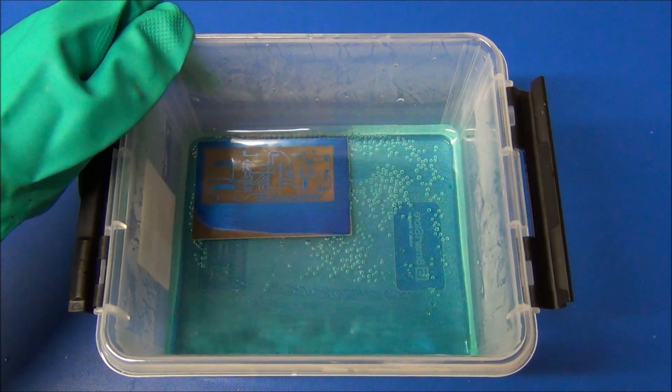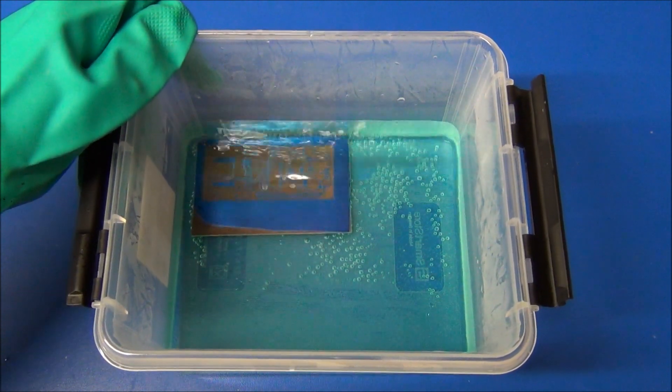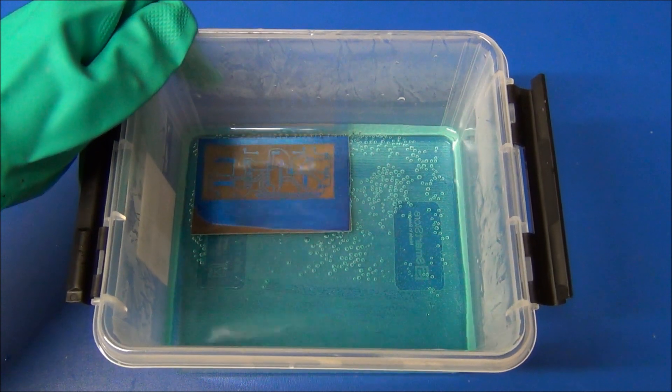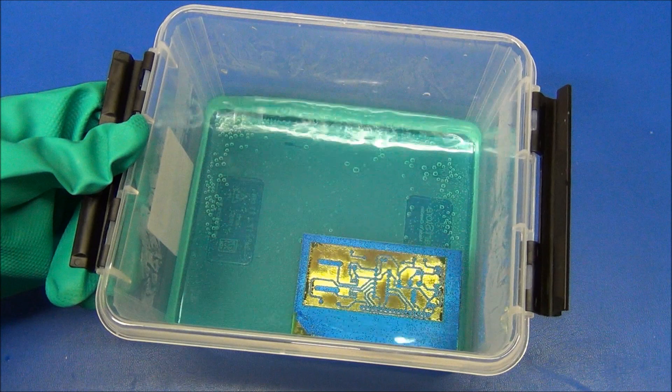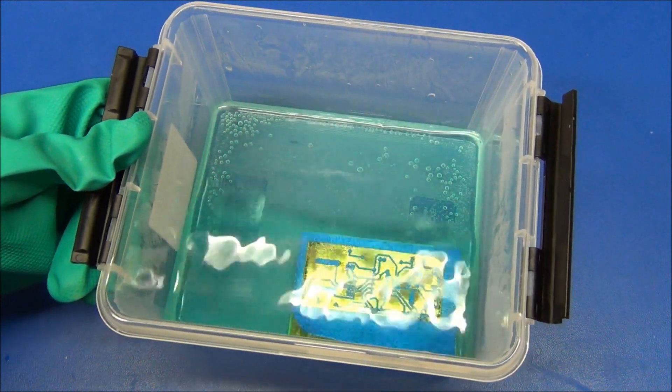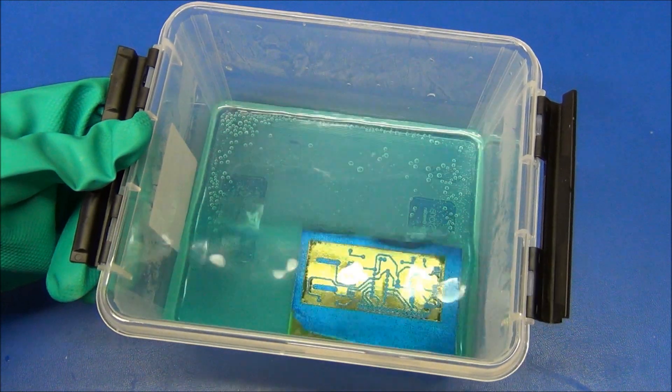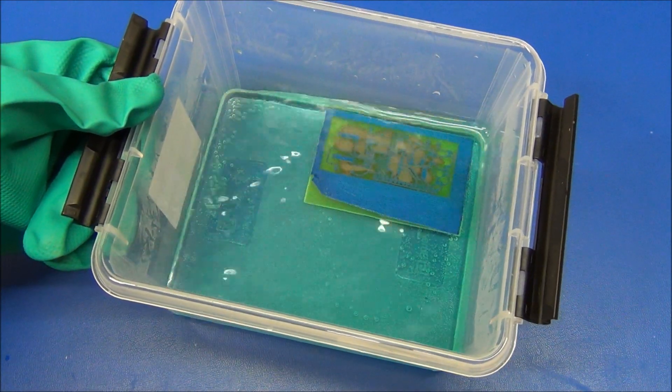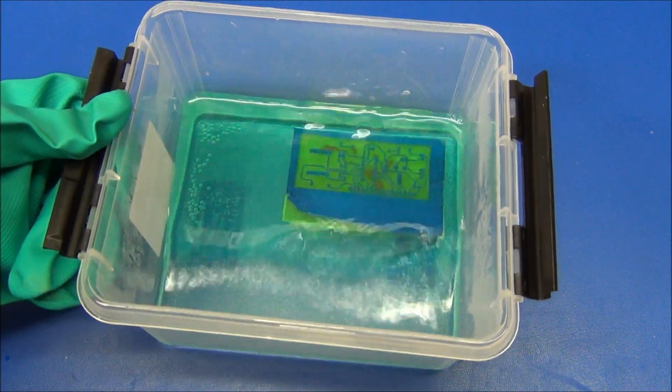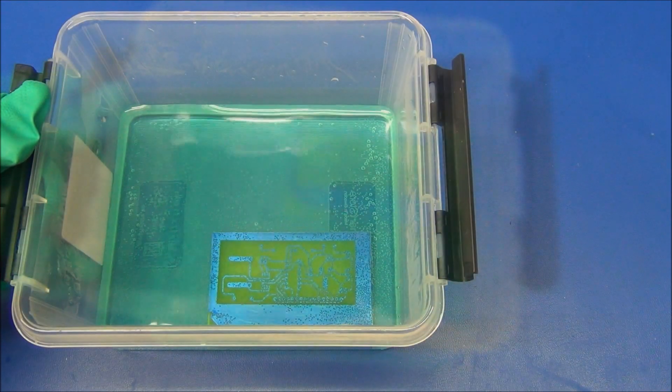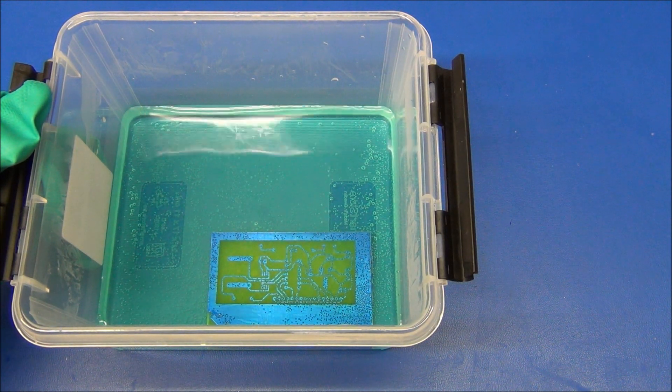You can use any kind of etchant that you like that will dissolve copper. The most popular etchant will be ferric chloride. After a little while you should see the copper start to dissolve. Once the etching is done, remove the board from the container and clean it with water.